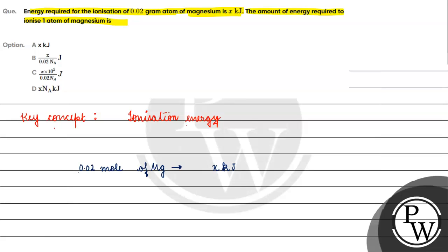How many number of atoms will be used for ionization? We will find it using the relation: number of atoms divided by Avogadro's number equals number of moles. So number of atoms equals number of moles into Avogadro's number, which is 0.02 into Avogadro's number — that is the number of atoms of magnesium.